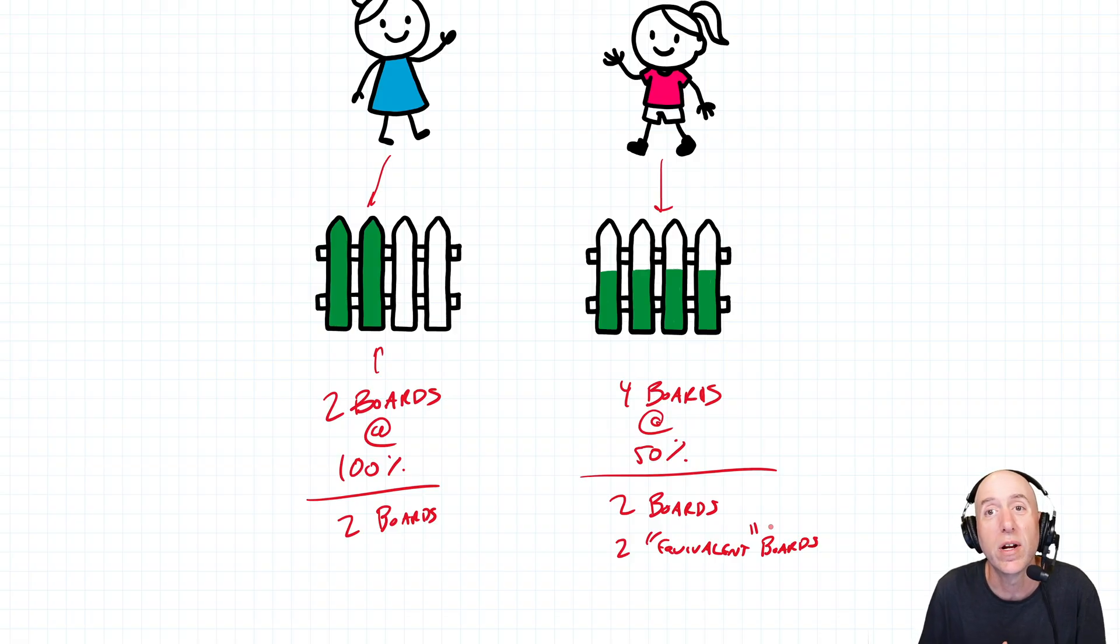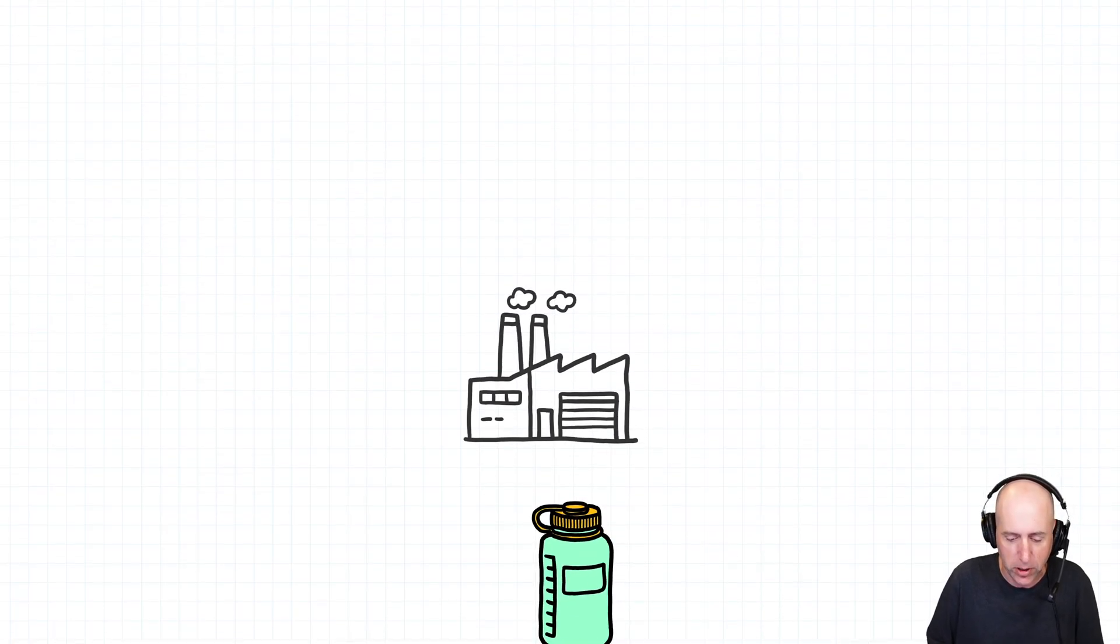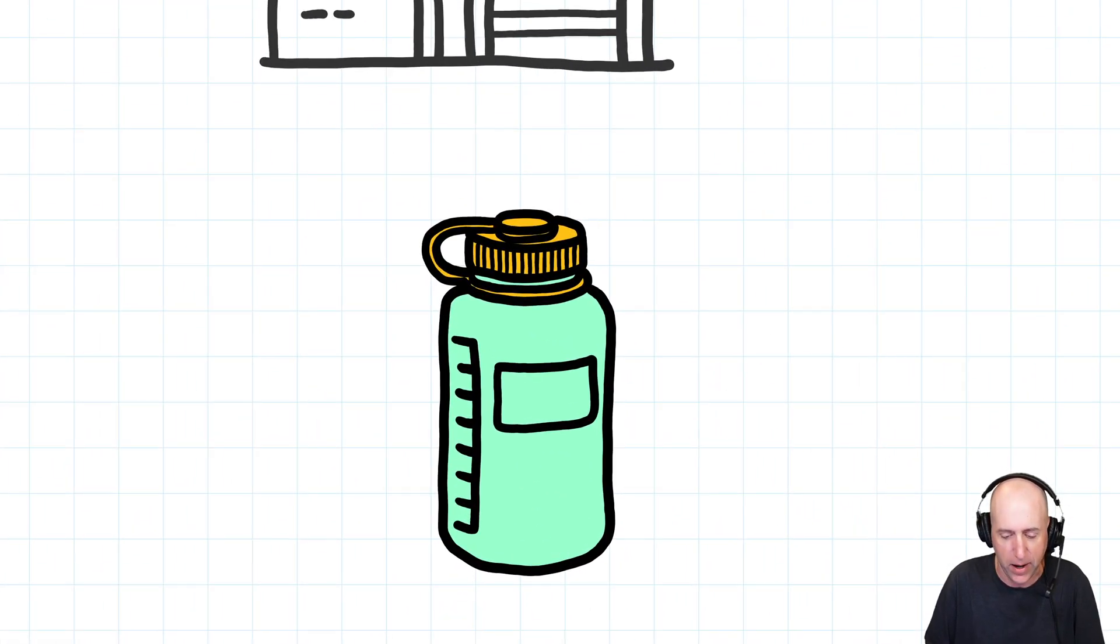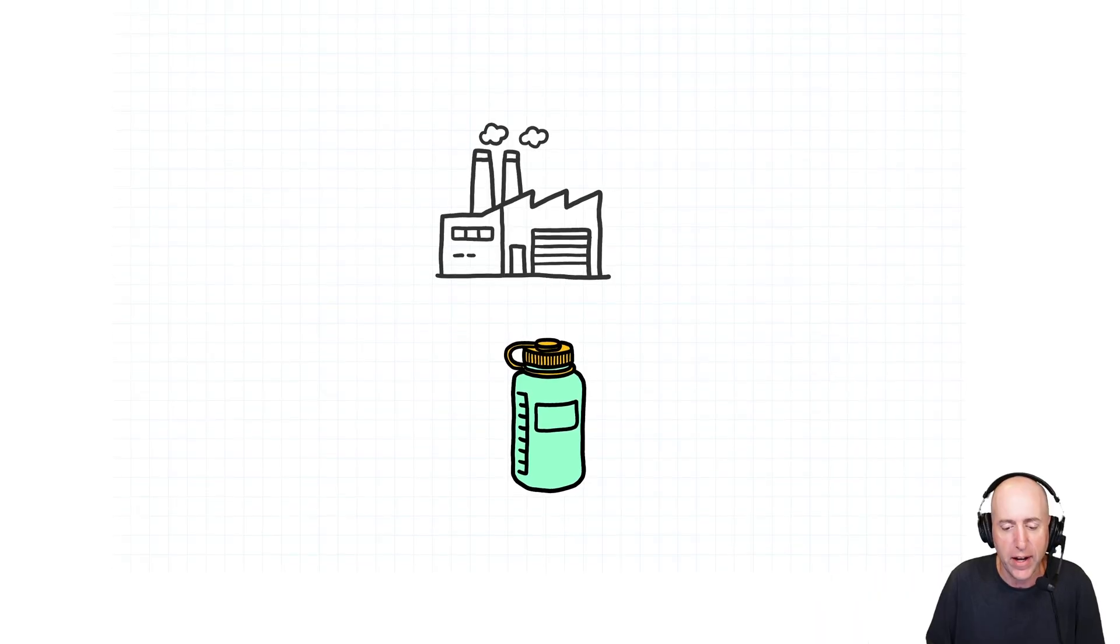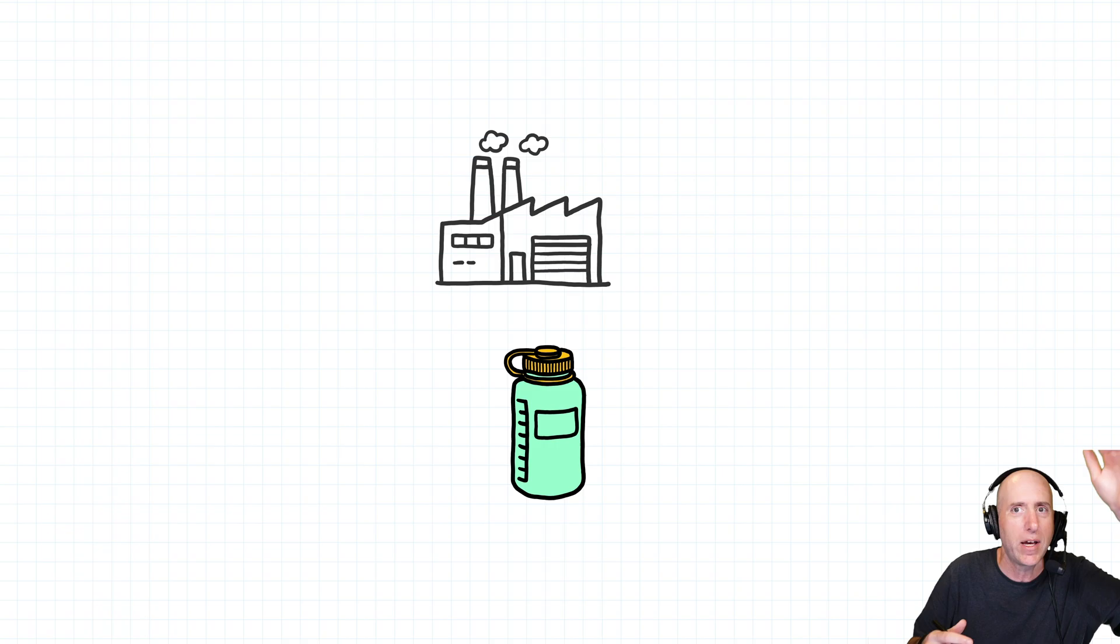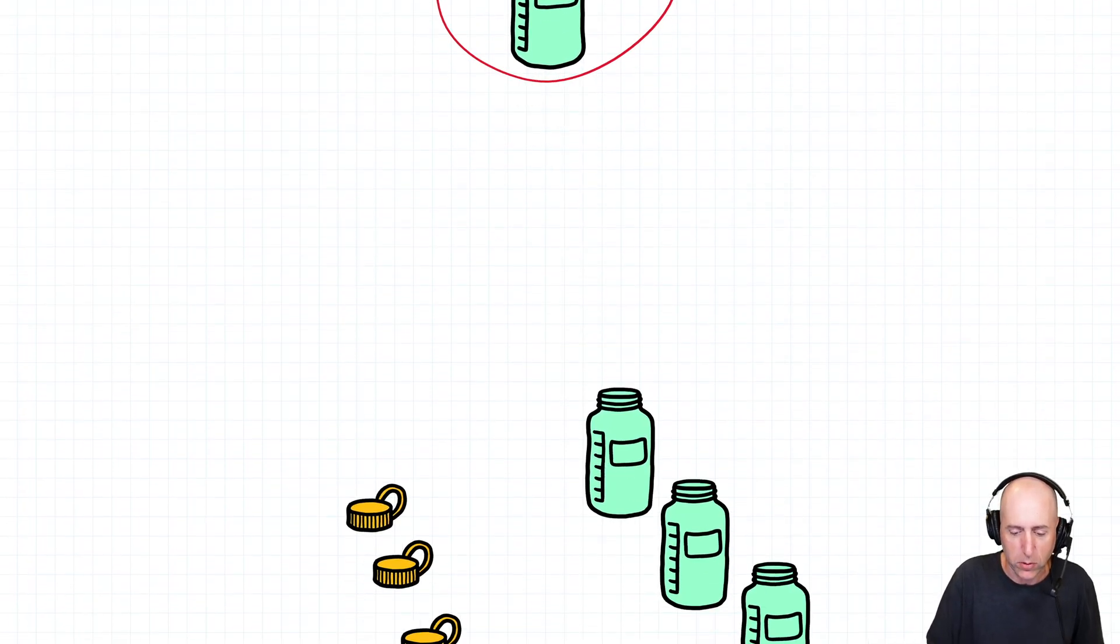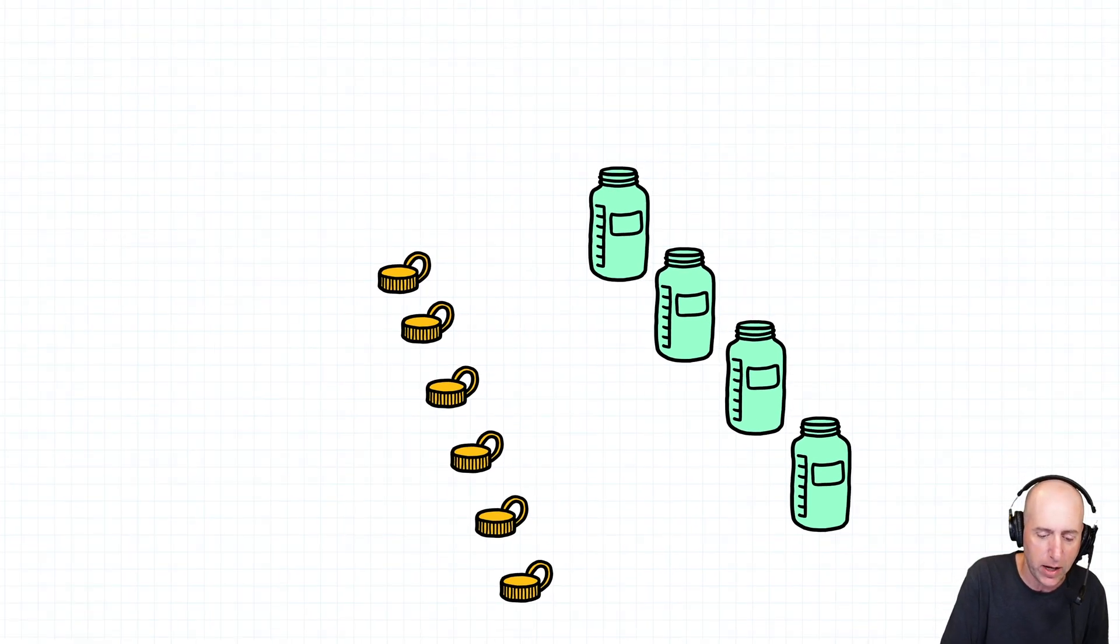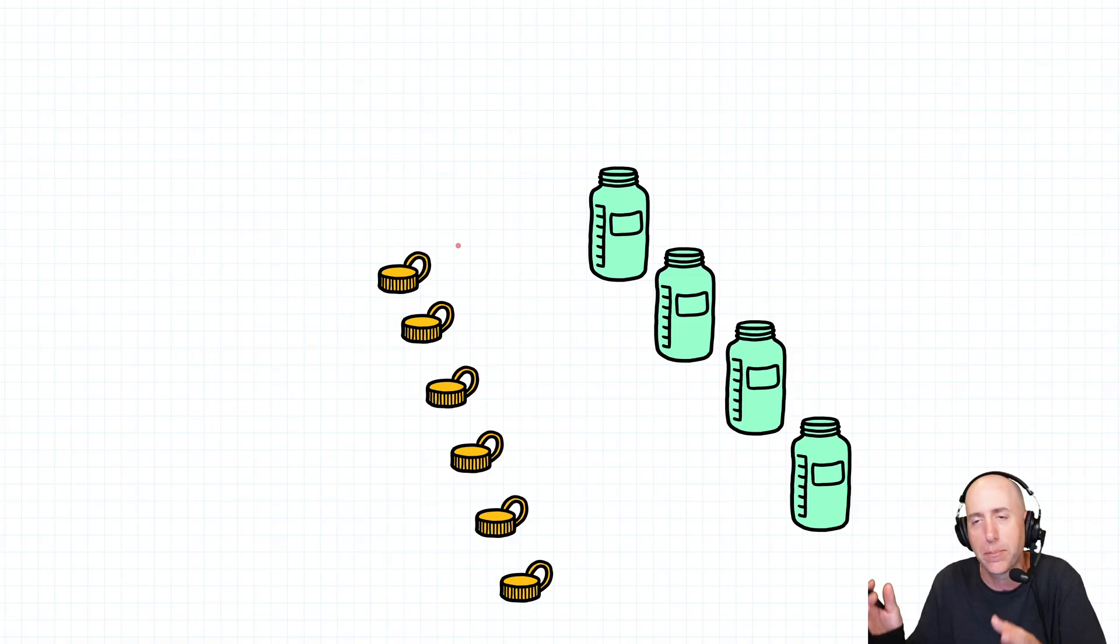This concept of equivalent units is going to return to us when we get into our problems. And the reason is when we return to our factory that makes these water bottles, what we find is, of course, if we completed 10,000 water bottles, the math is really easy. It's this many dollars divided by this many bottles. The issue is, at the end of any given month, we don't have just finished bottles. We got a bunch of half-finished stuff. We got a bunch of caps, bottles. They haven't been put together. They're in various states of completion.